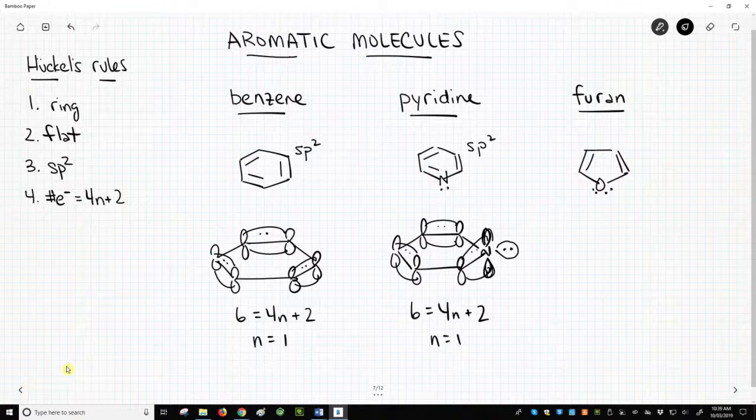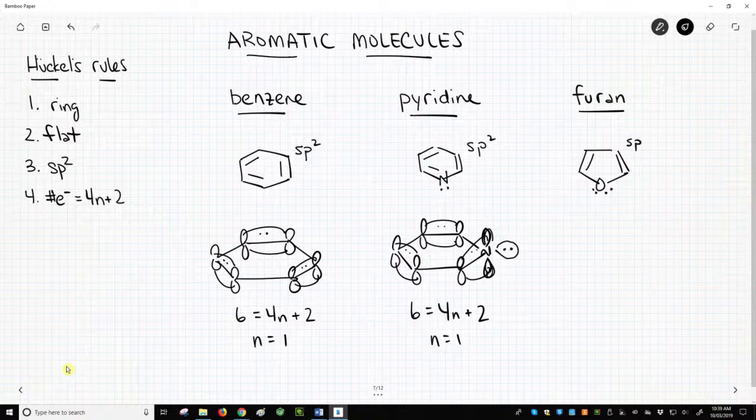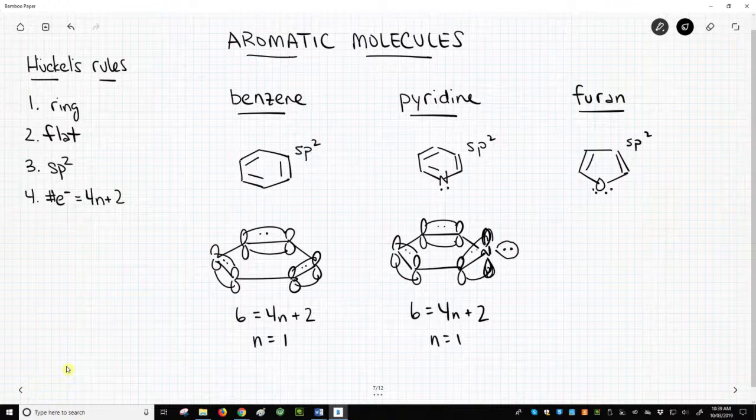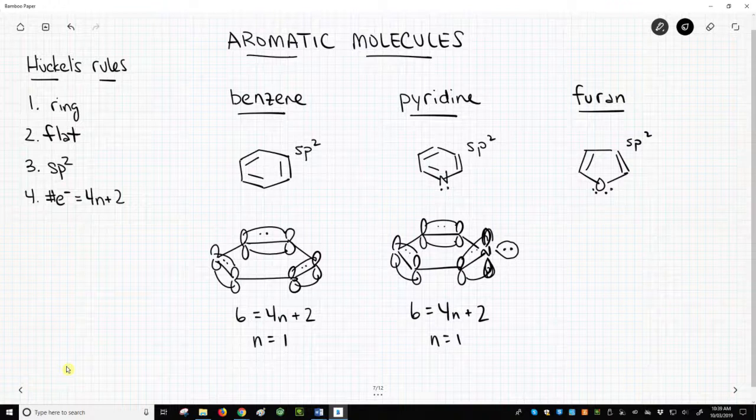Example 3, furan. Furan has a ring. It is flat. All the carbons are clearly sp2. But what about that oxygen? Way back when we first saw hybridization, we said that lone pairs prefer a hybrid orbital, unless there is a double bond next door. In that case, one lone pair will take a p orbital.